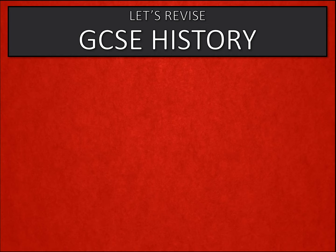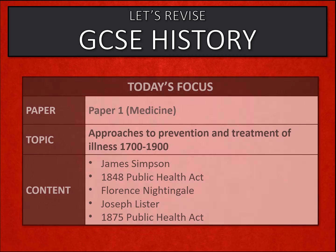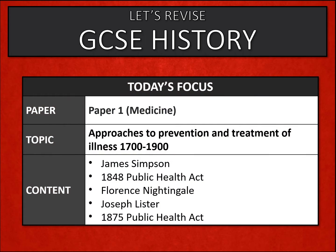Hello and welcome to a GCSE History revision tutorial. We're going to be looking at some Paper 1 material and we'll be looking at approaches to prevention and treatment of illness from 1700 to 1900. Looking at some key individuals — Simpson, Nightingale and Lister — and two key pieces of government legislation: the 1848 and 1875 Public Health Acts.